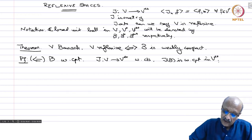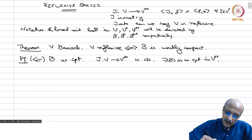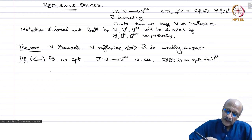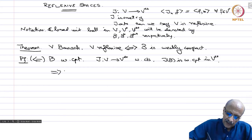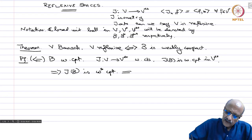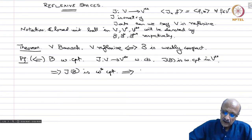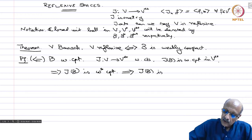Continuous image of a compact set is compact. So if JB is compact in the weak topology, then it will be compact in any smaller topology. This implies JB is weak-star compact.